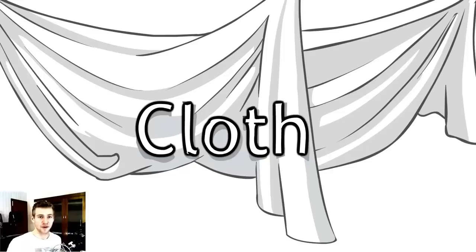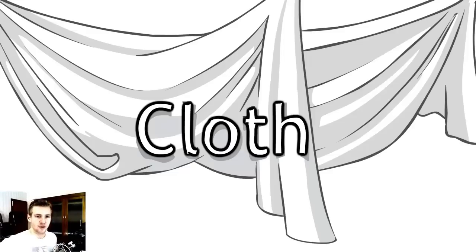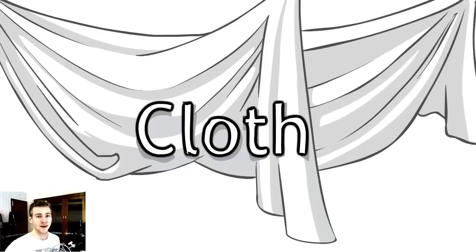Cloth is a bit different because it's extremely sporadic and organic. If you hold up a piece of cloth and drop it, it will fold and fall in a different way every time. If you're wearing a shirt and pull it down, it's going to have different creases every time. The folds will never be the same — ever.